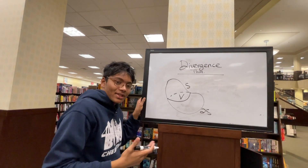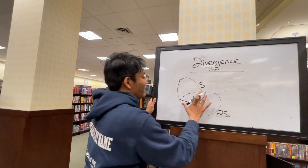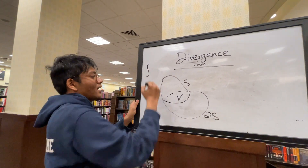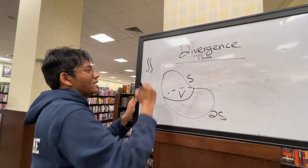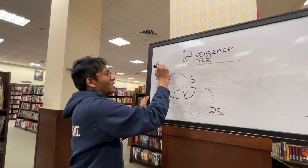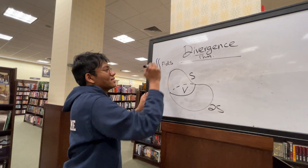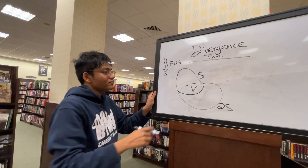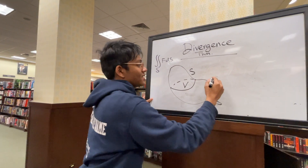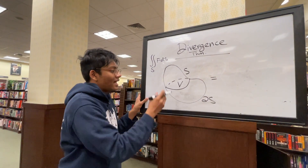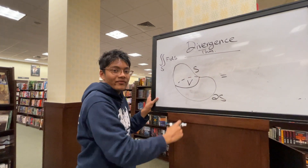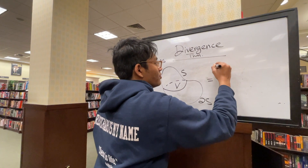So what Gauss's divergence theorem says is that if I take the integral over the surface — F dot dS — the flux out of this surface is going to equal the divergence out of each little small part of this solid. So let me show you what I mean.